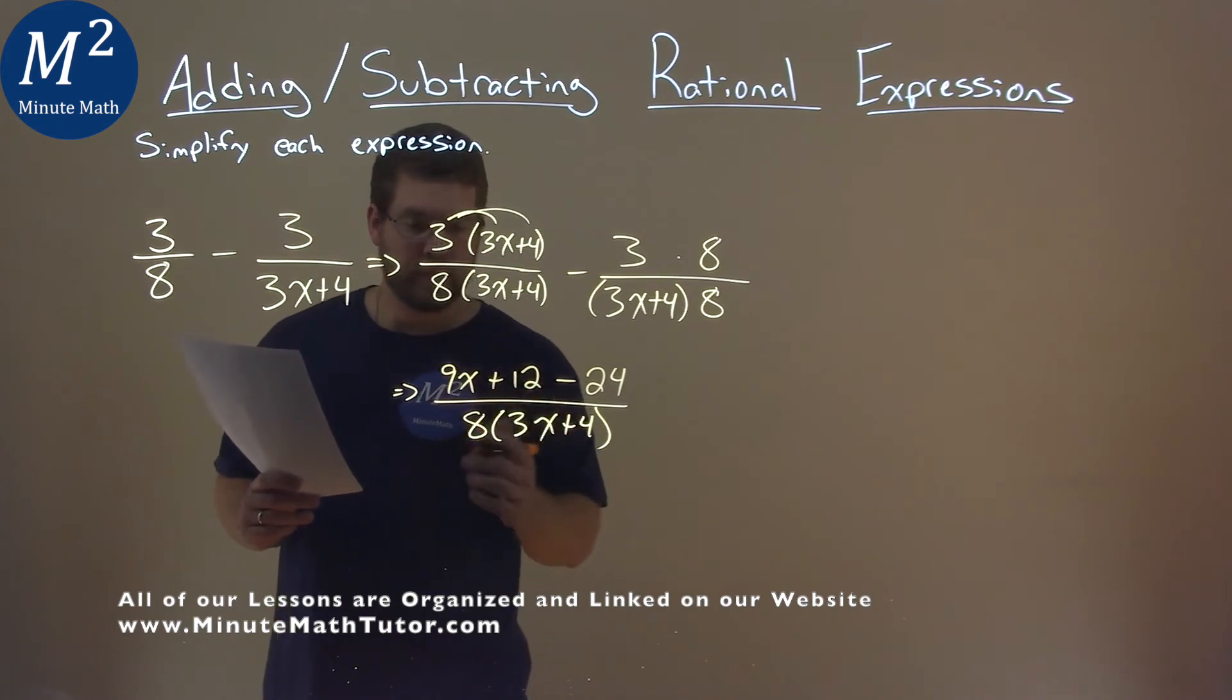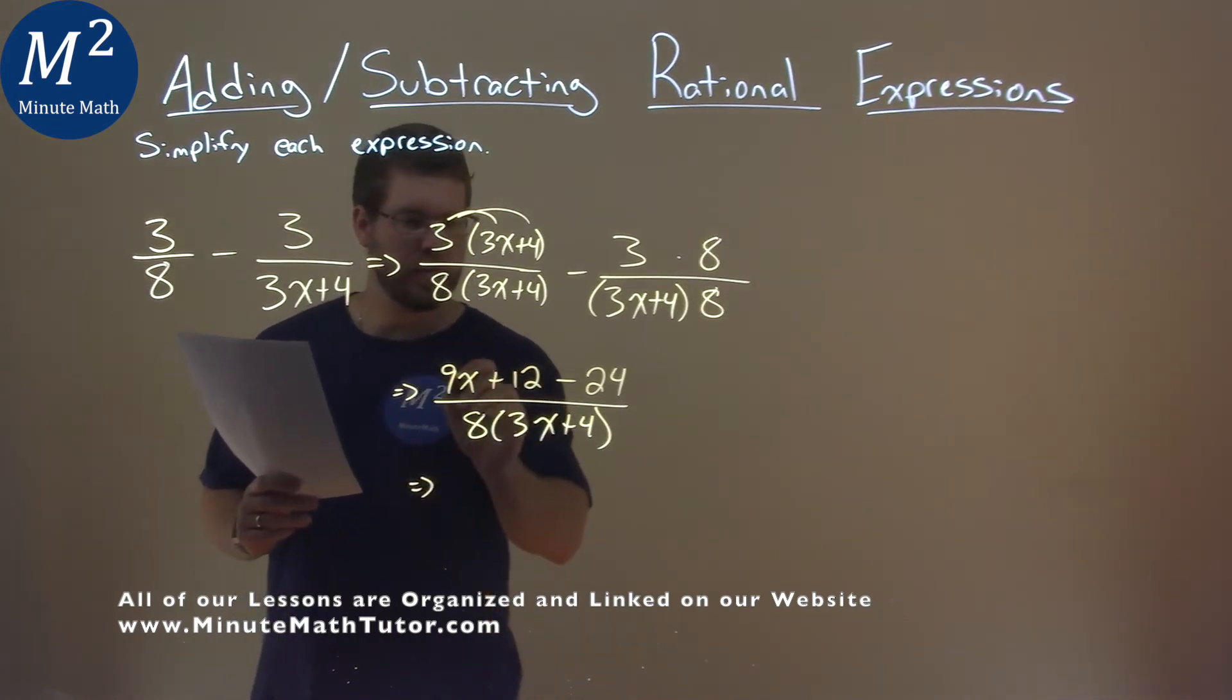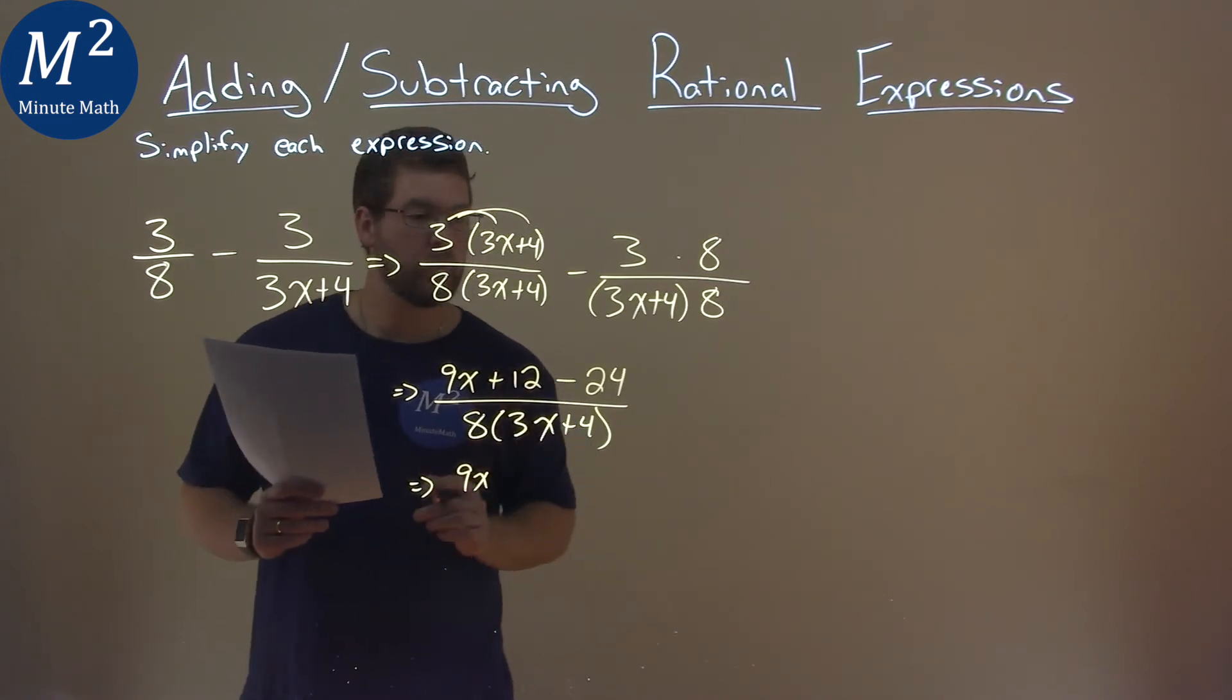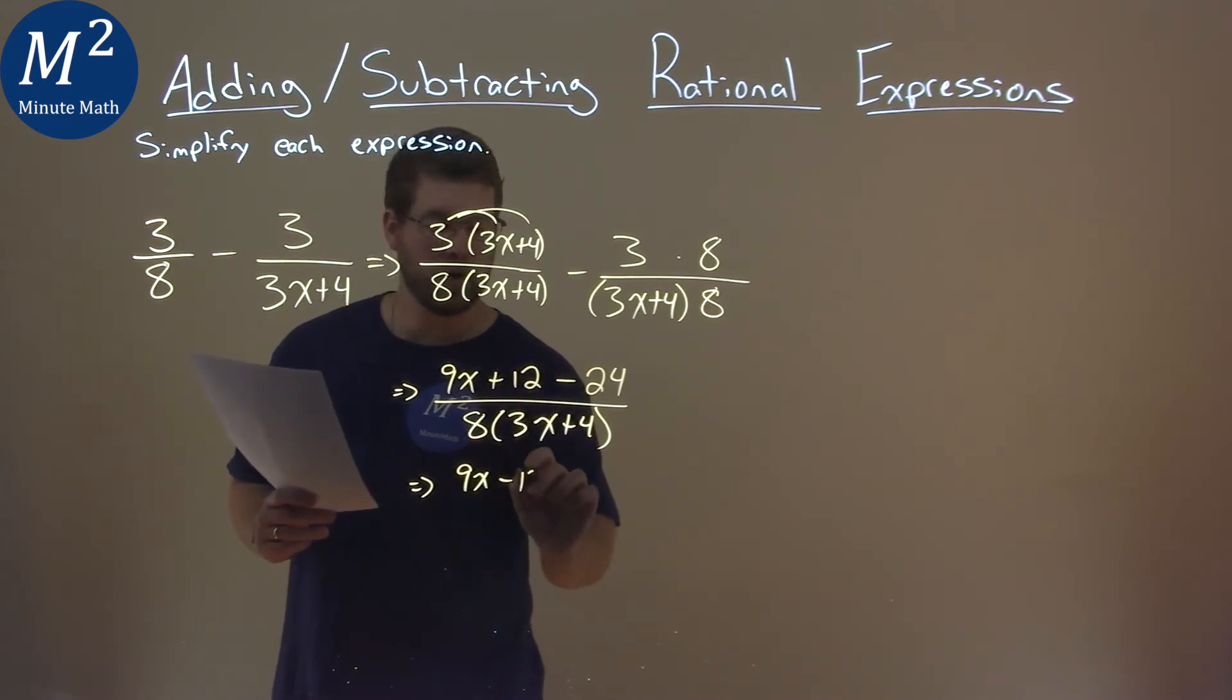Well then from here, we need to simplify this, so 9x can't really combine with anything else, 9x here, but 12 minus 24 is minus 12. And that's going to be over 8 times 3x plus 4.